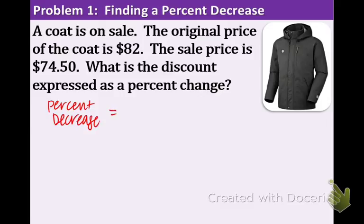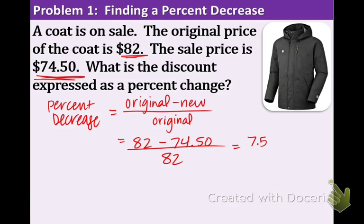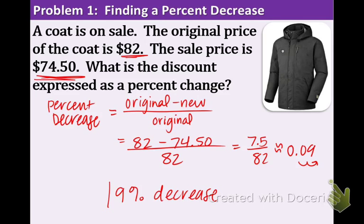Remember, in percent decrease we're doing the original and subtracting the new from that, with the original on the bottom. The original is always on the bottom whether it's increase or decrease. So the original is 82, the new is 74.50, and the original on the bottom is 82 again. When you do the subtraction in the numerator, you get 7.5 divided by 82, which equals approximately 0.09. Remember, this is not in percent form yet. We need to move the decimal over twice, multiplying by 100 essentially. So we get 9% decrease. Technically, that isn't such a good sale.